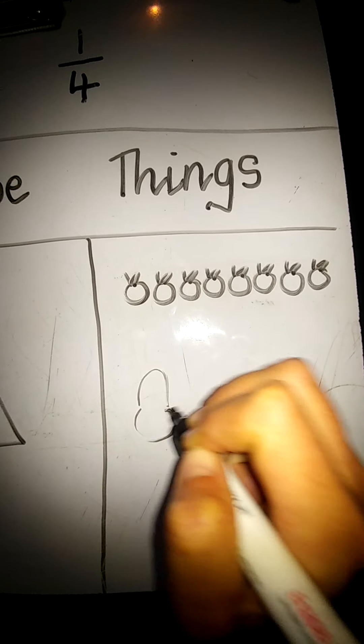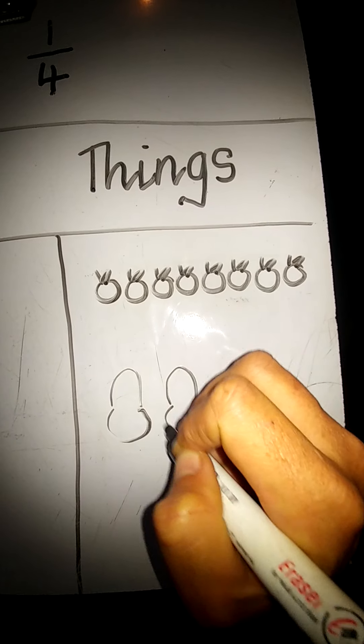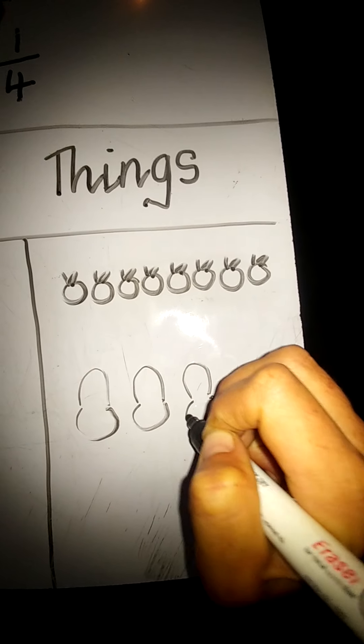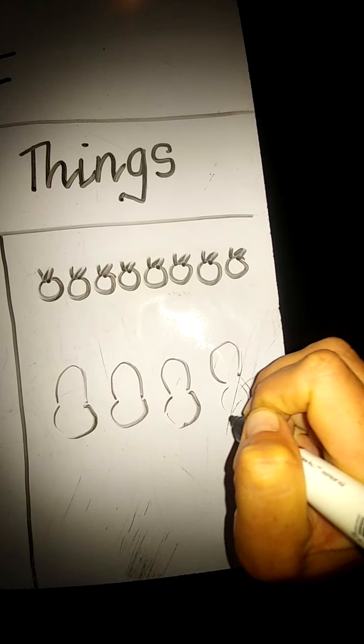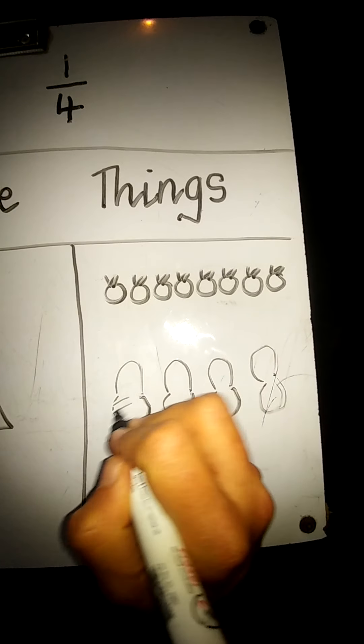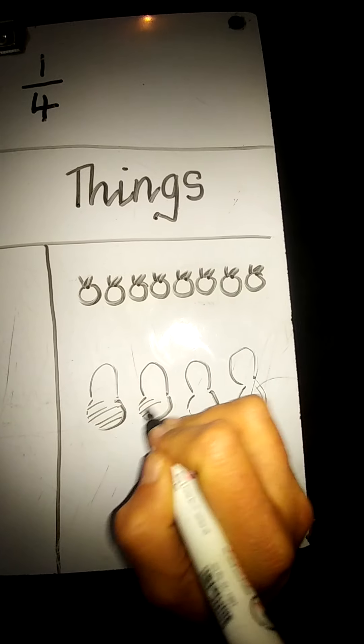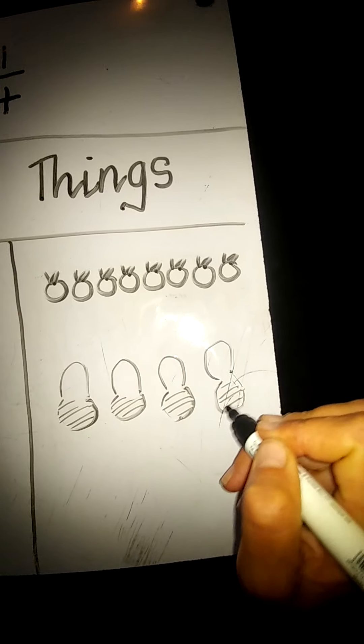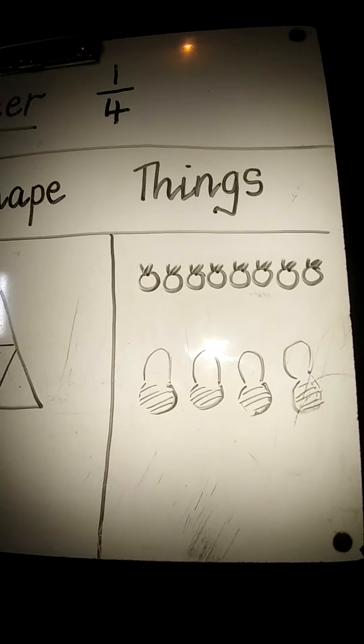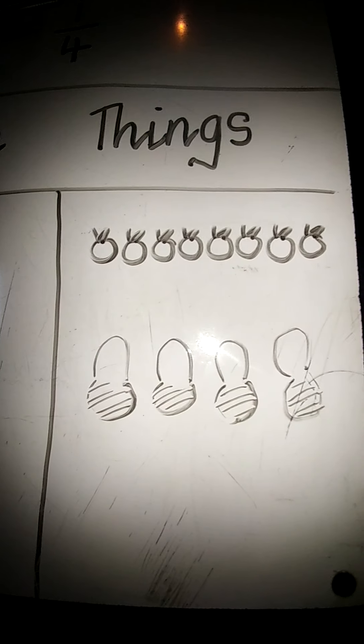So let's draw our baskets. There's my first basket, my second basket, third basket, fourth basket. Lovely. We'll make them like local Mozambican weave baskets. You can put your apples in boxes if you like. And it's really easy. Now we're just going to share them.